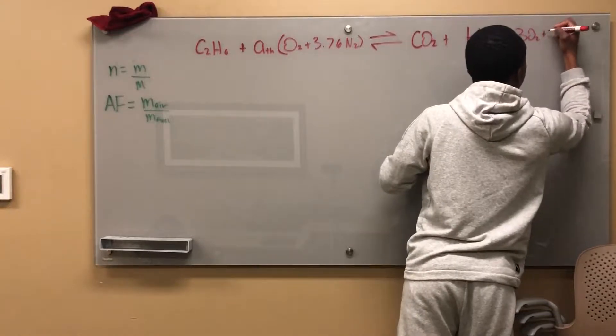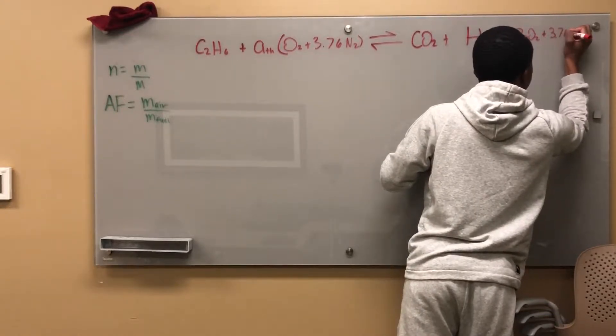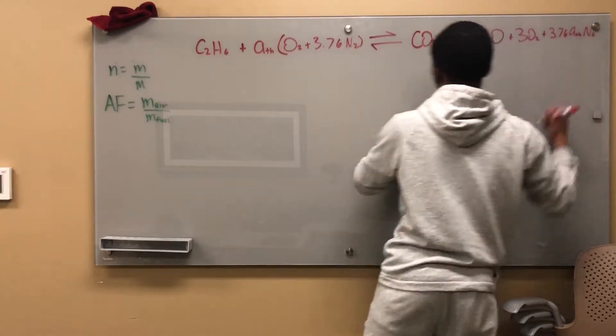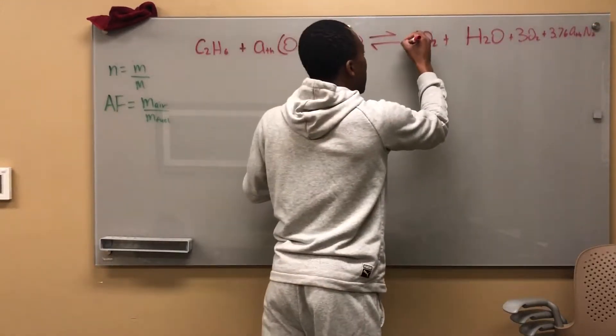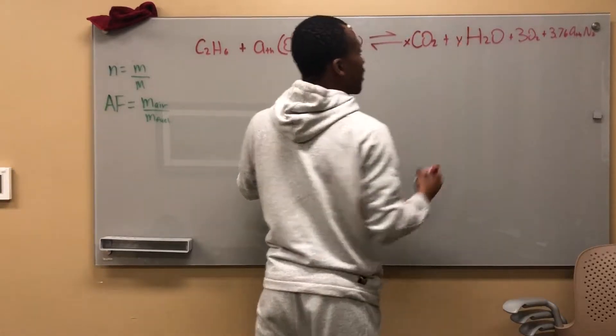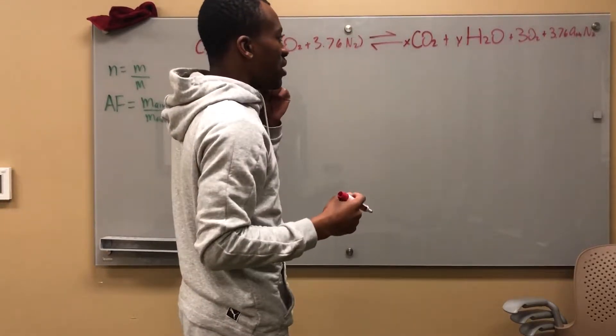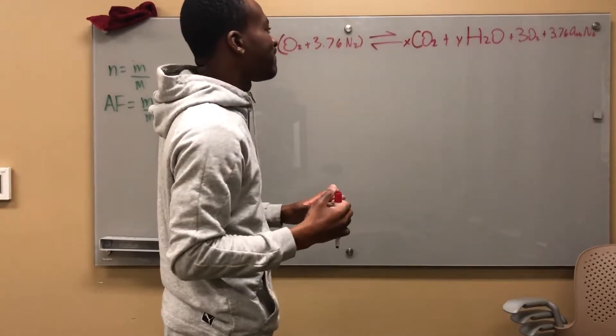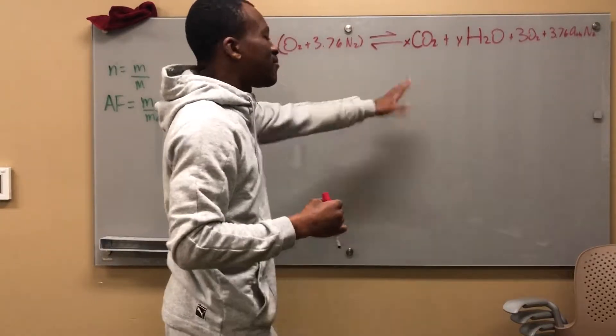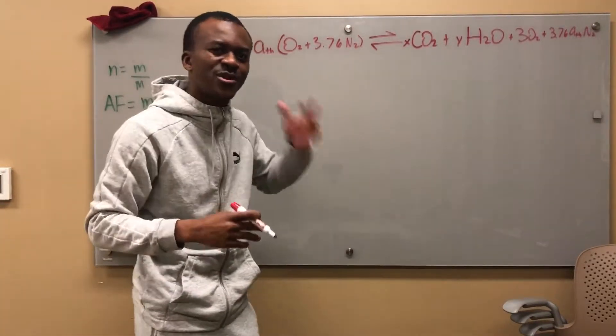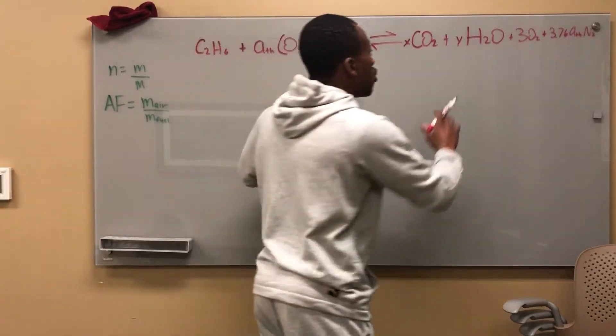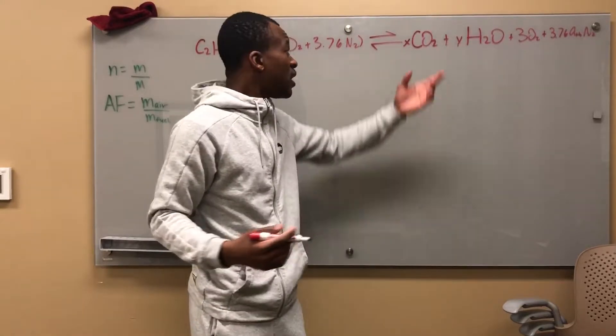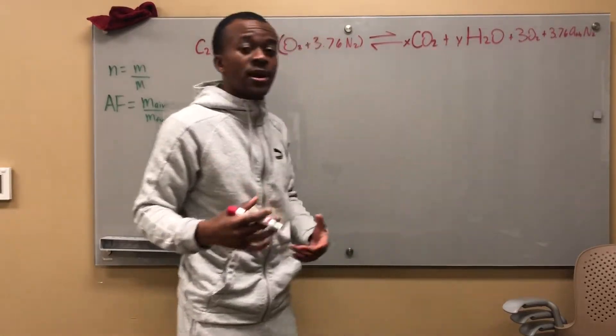And then what you do with the nitrogen, you're always going to have that 3.76 ATH N2. So this is what we end up getting. I'm going to put an X here and a Y here. This X and this Y is just basically saying I don't know how many kilomoles are going to be produced of carbon dioxide and water.